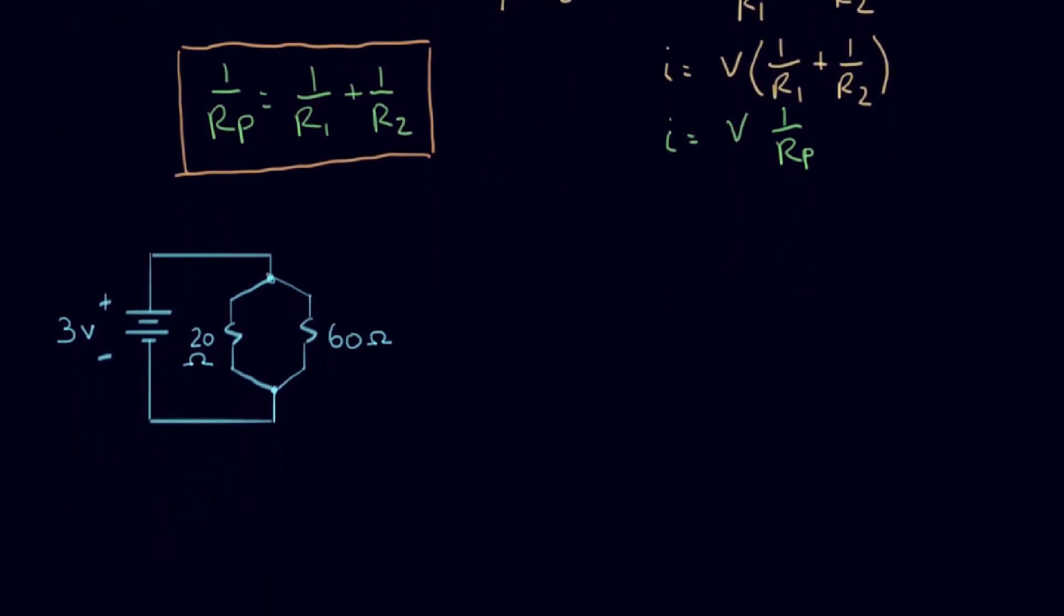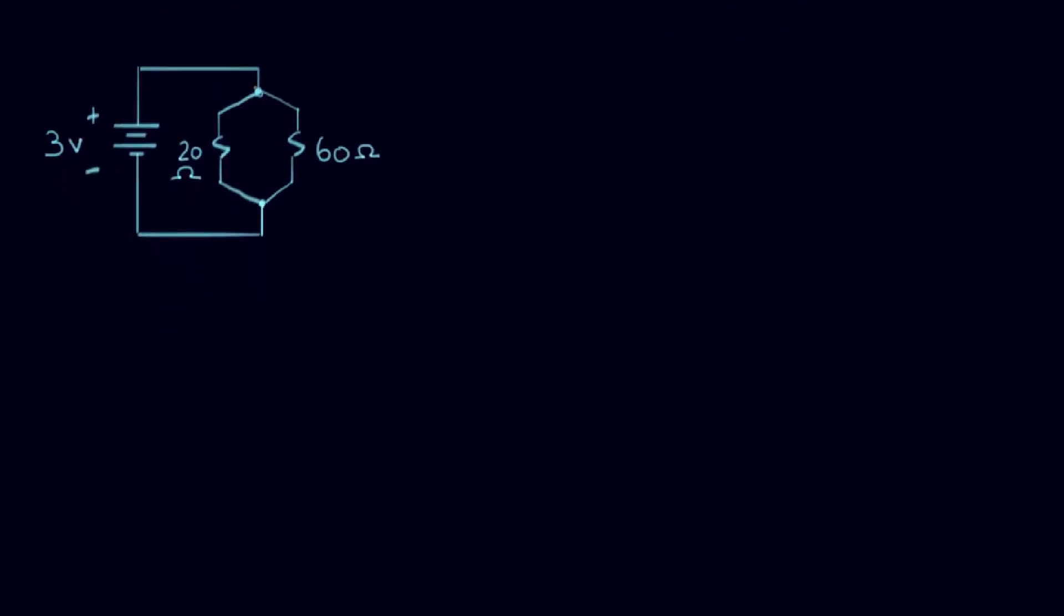Here's an example where I've actually filled in some numbers for us. So I have a 20 ohm resistor in parallel with a 60 ohm resistor driven by a three volt battery. And what I want to do is combine these two parallel resistors and find out what is the current right here. That's my unknown thing. I know everything else about this.